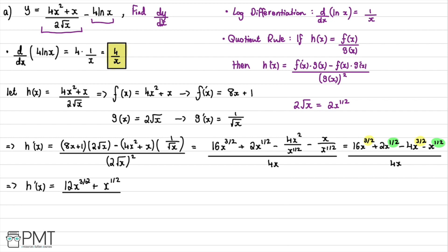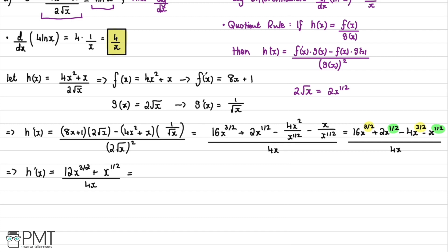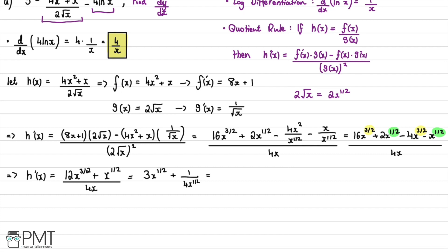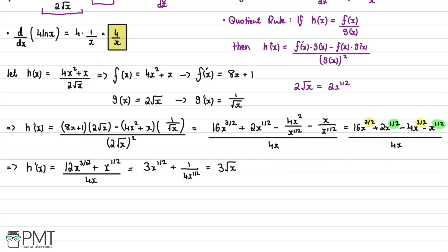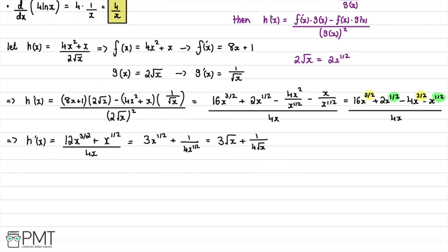Dividing each numerator term by 4x: 12/4 = 3, and x^(3/2)/x = x^(1/2), giving 3x^(1/2) = 3√x. For the second term, x^(1/2)/4x = 1/(4x^(1/2)) = 1/(4√x). So h'(x) = 3√x + 1/(4√x).